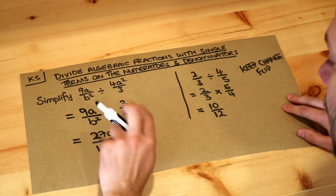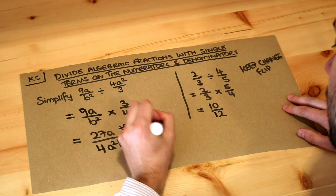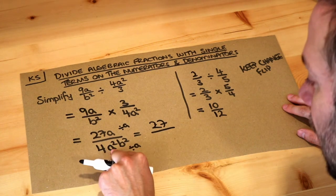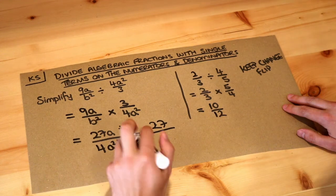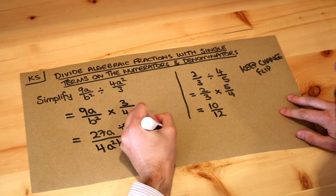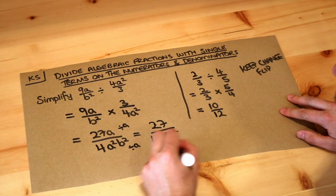And when we do that, that gets rid of that a, we're just left with 27. And when we divide the bottom by the a, if that's a times a and we divide by one of those a's, we're just left with a single a, so it'd be 4a, and then we've still got the b squared. So that would be the final answer.